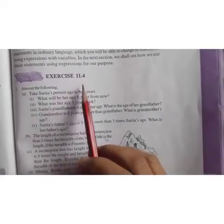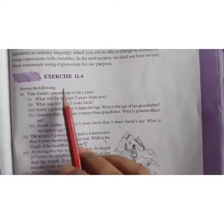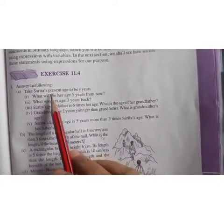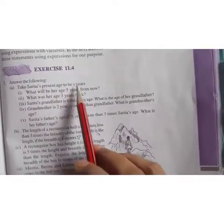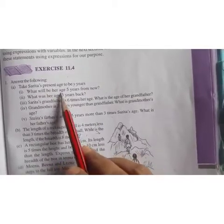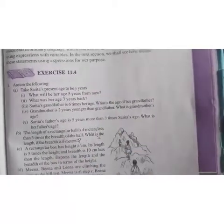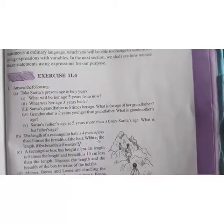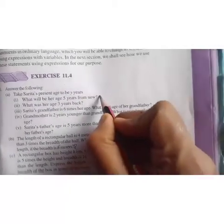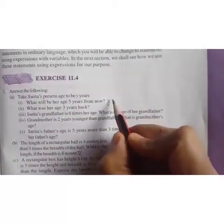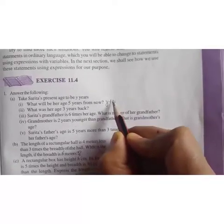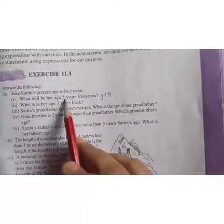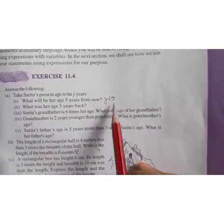Exercise 11.4. Answer the following. Take Sarita's present age to be Y years. What will be her age 5 years from now? So after 5 years what will be her age? Presently it is Y. So after 5 years it will be plus 5. So her age after 5 years will be Y plus 5.